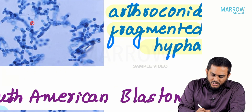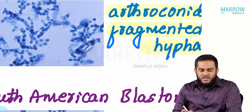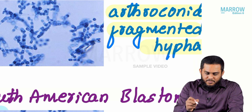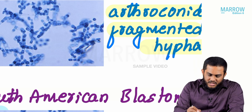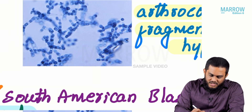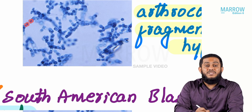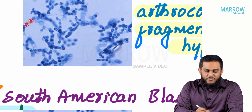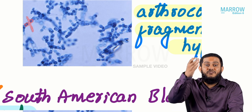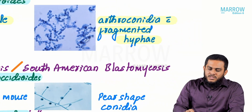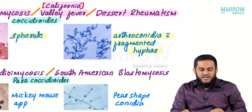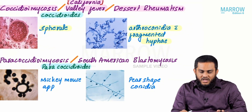The mold form of Coccidioides shows arthroconidia with fragmented hyphae. Arthroconidia are rectangular-shaped conidia present in between the hyphae, making the hyphae appear fragmented. Rectangular-shaped conidia with fragmented hyphae = mold form of Coccidioides.